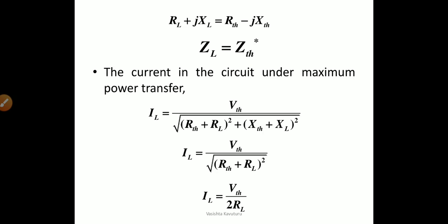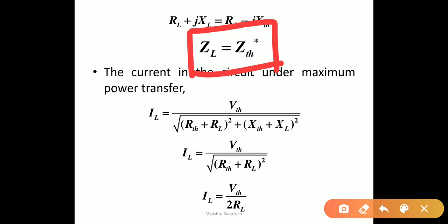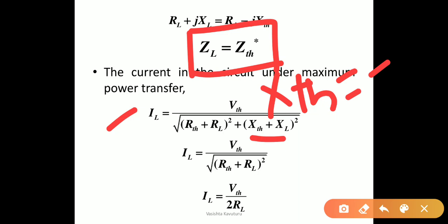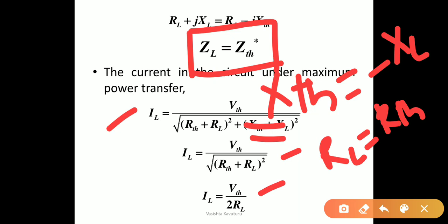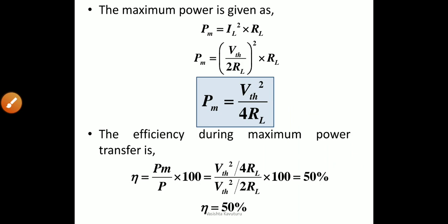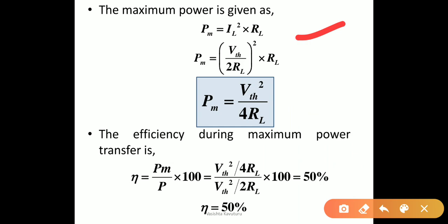Under maximum power transfer conditions, IL = VTH / √[(RTH + RL)² + (XTH + XL)²]. Since XTH = −XL, the reactive term vanishes, giving IL = VTH / √(RTH + RL)². Since RL = RTH, this simplifies to IL = VTH / (2RL). Substituting into the power formula gives maximum power Pm = VTH² / (4RL). The efficiency under maximum power transfer conditions is 50%, which holds for both AC and DC circuits.